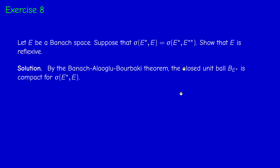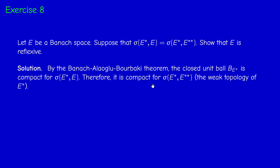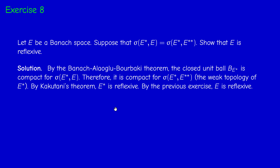Now we have the tools. By the Banach-Alaoglu-Bourbaki theorem, the closed unit ball of E* is compact for the weak-star topology. Since the weak and weak-star topologies coincide, it is compact for the weak topology. By Kakutani's theorem, E* is reflexive, and according to the previous exercise, E is reflexive.